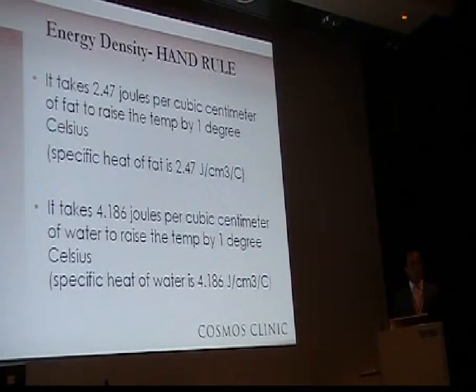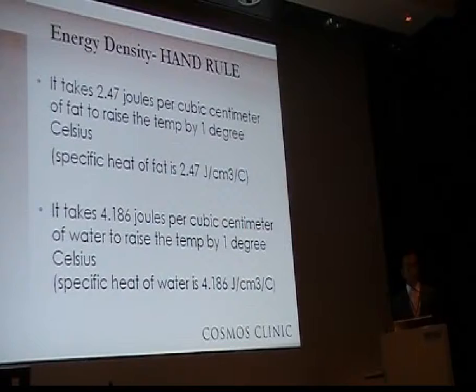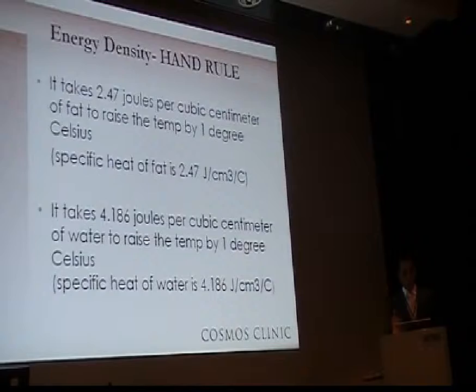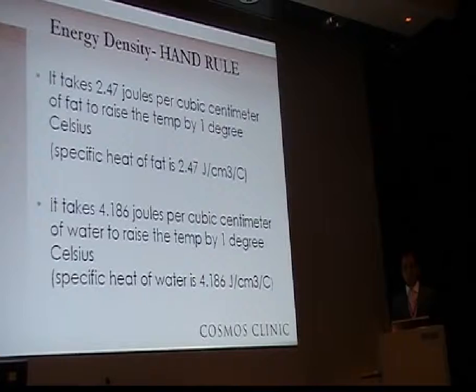Going back to some basic physics, the specific heat of fat is approximately 2.5 joules per cubic centimetre per degree Celsius. This means that 2.5 joules per cubic centimetre of fat is needed to raise the temperature by 1 degree Celsius. The specific heat of water is approximately 4.2, meaning 4.2 joules per cubic centimetre of water is needed to raise the temperature by 1 degree Celsius.